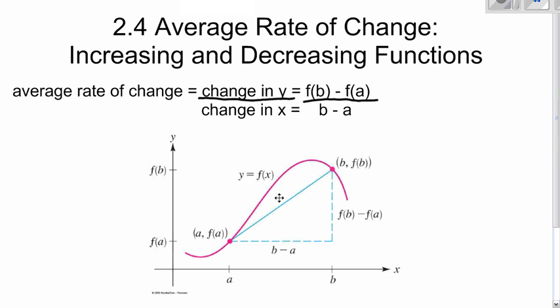Here's a graph that illustrates that. If this is the interval that you're looking at from a to b, plug in a, plug in b, you actually get those values. And then the average rate of change would be the change in y, which is f of b minus f of a, over the change in x, which would be b minus a.